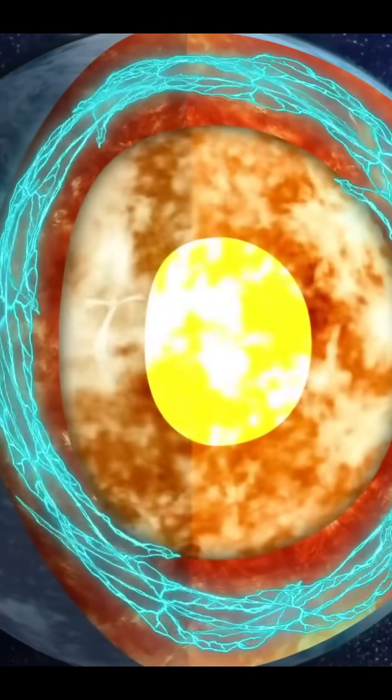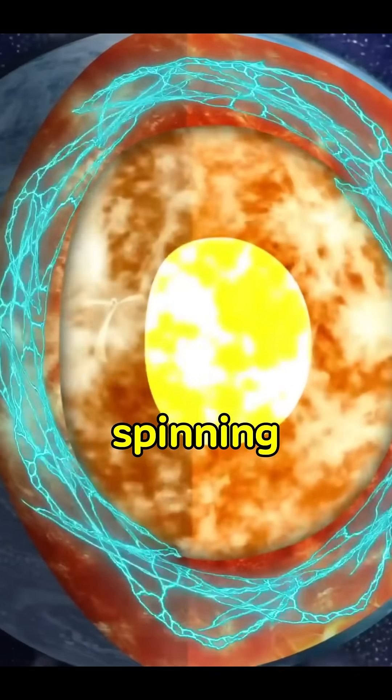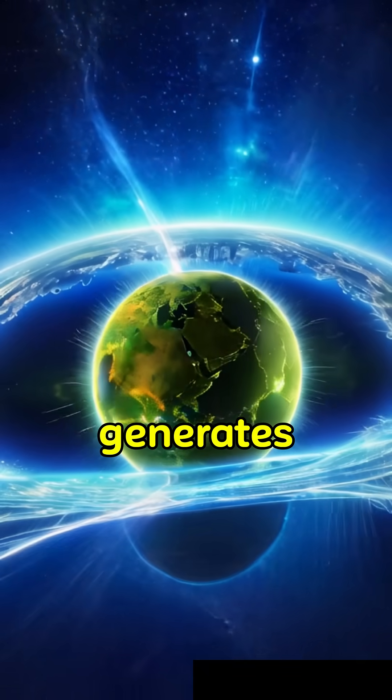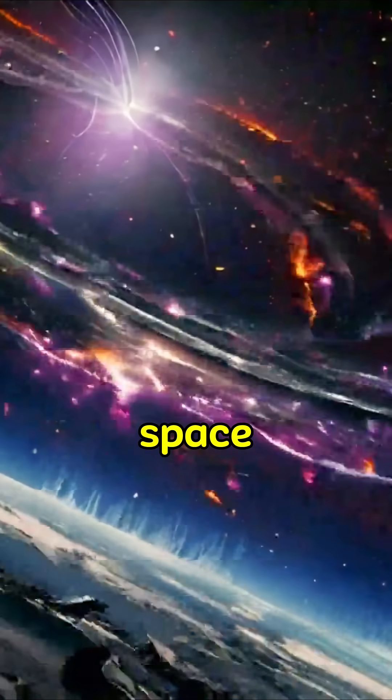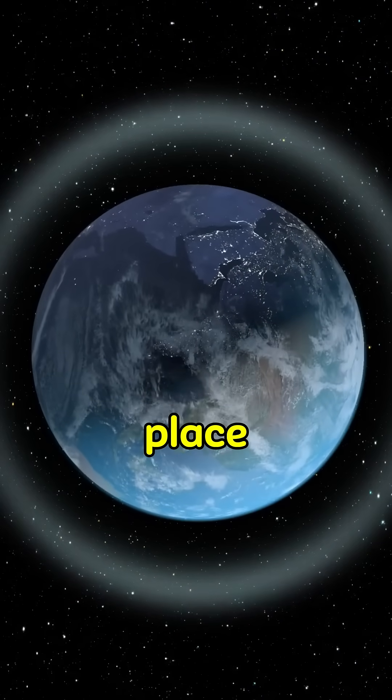The outer core is a sea of molten iron, spinning and conducting electricity. This movement generates Earth's magnetic field, which protects us from harmful space radiation by holding our atmosphere in place.